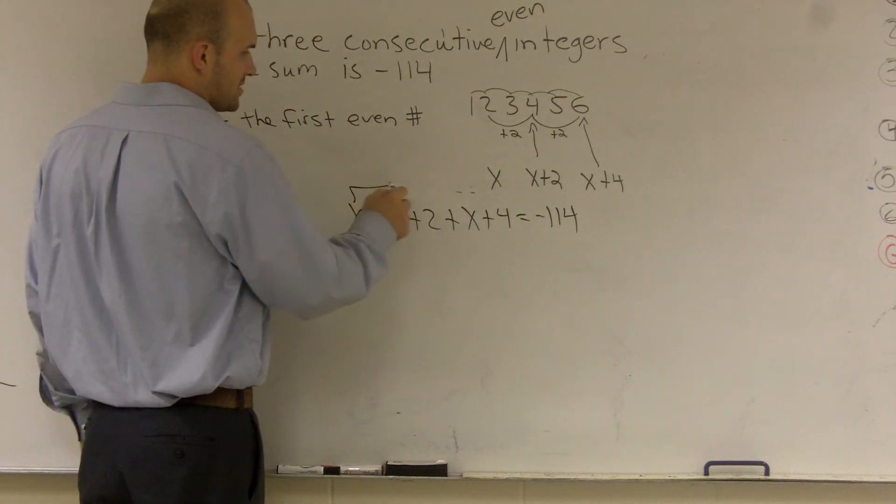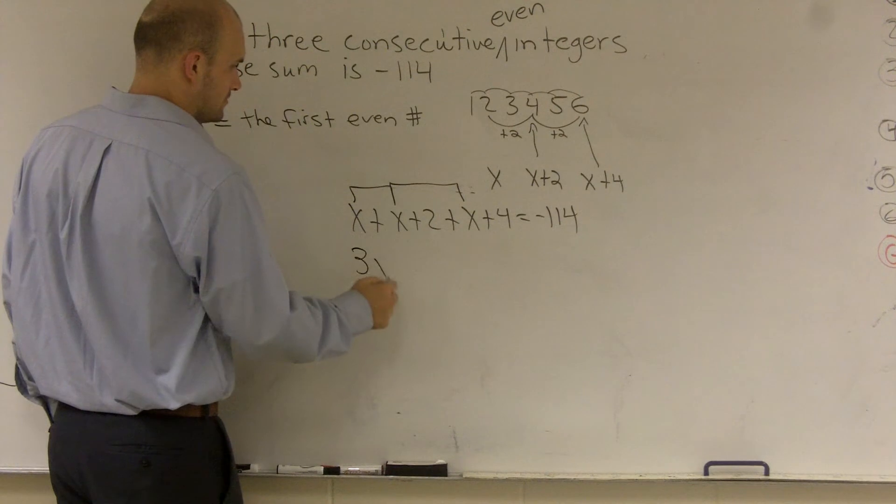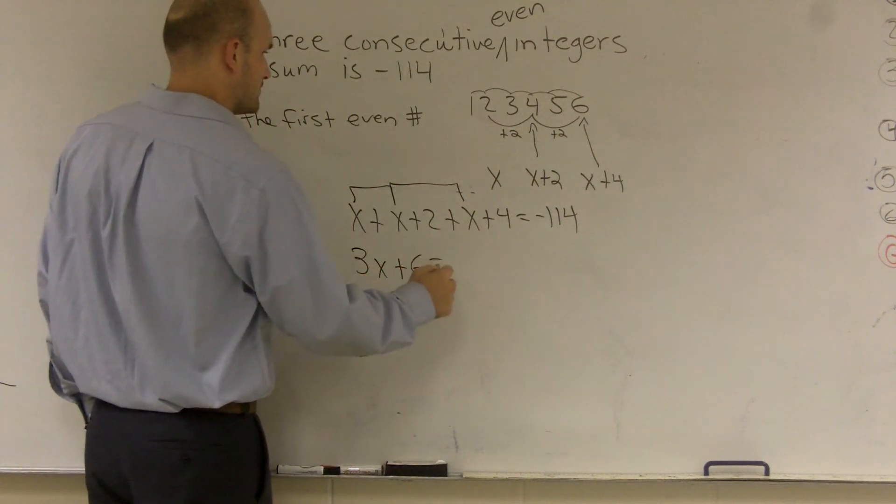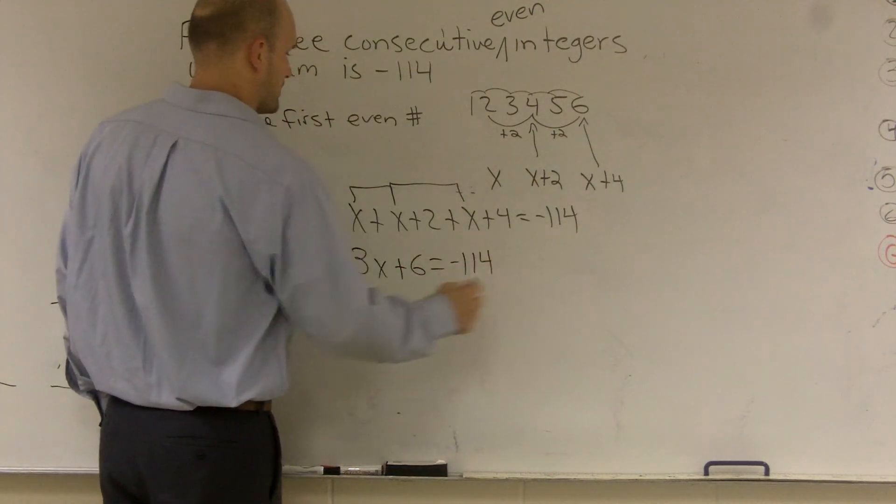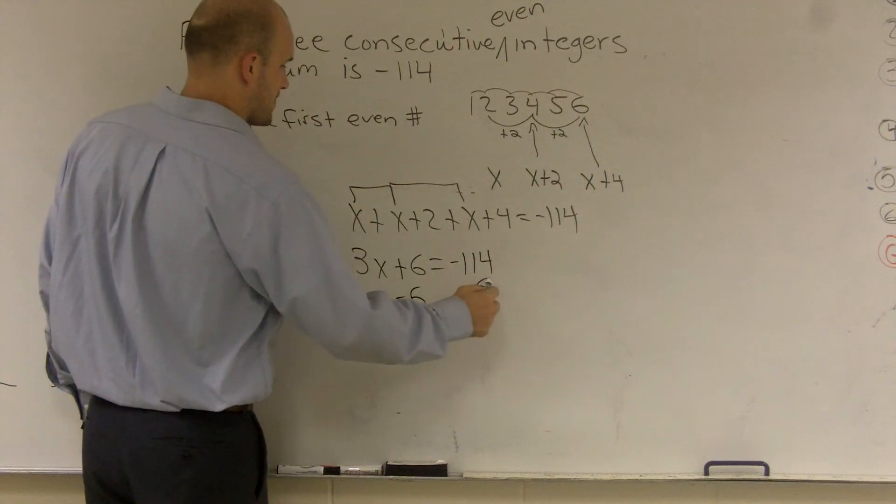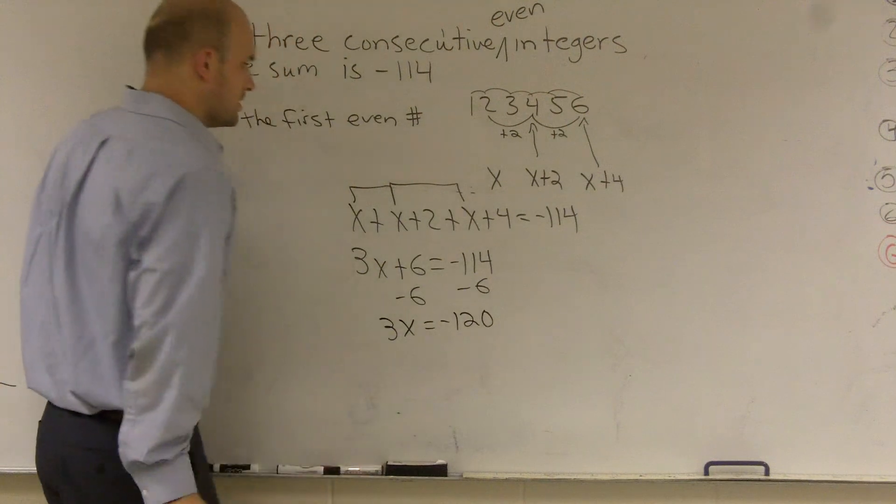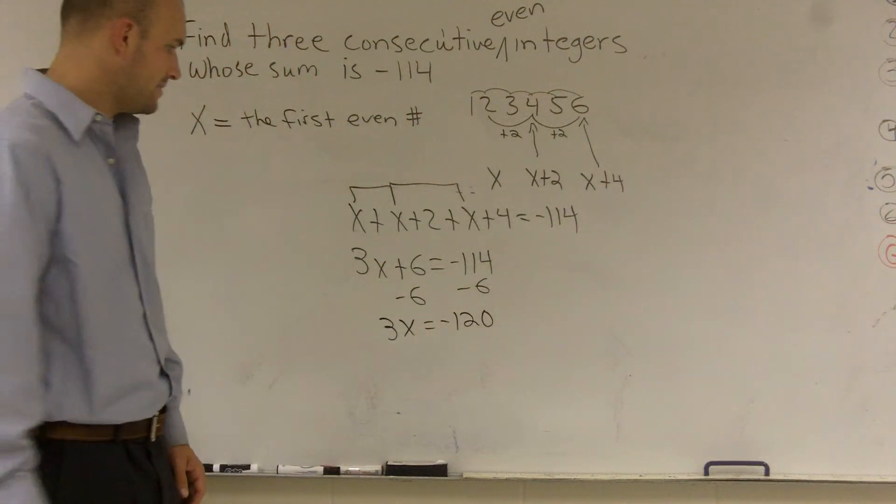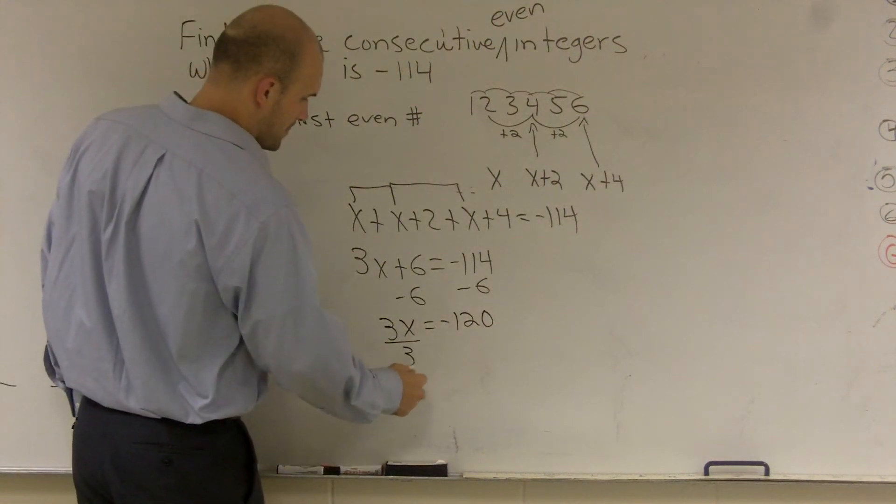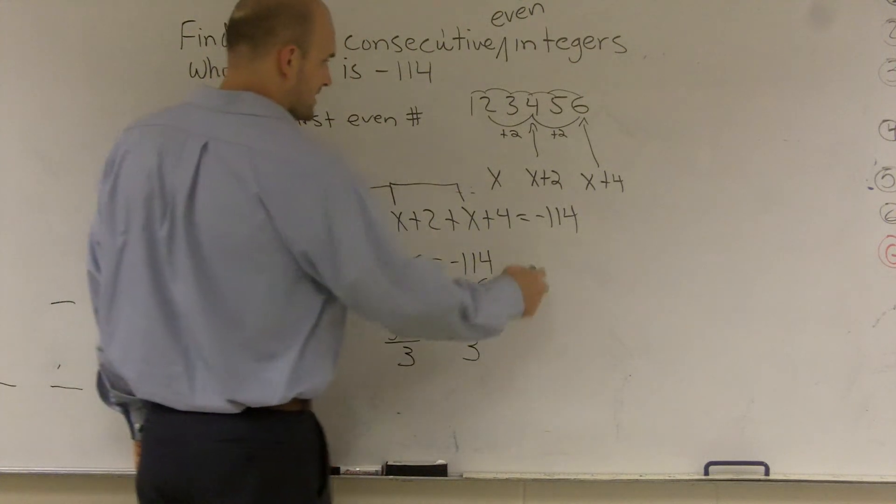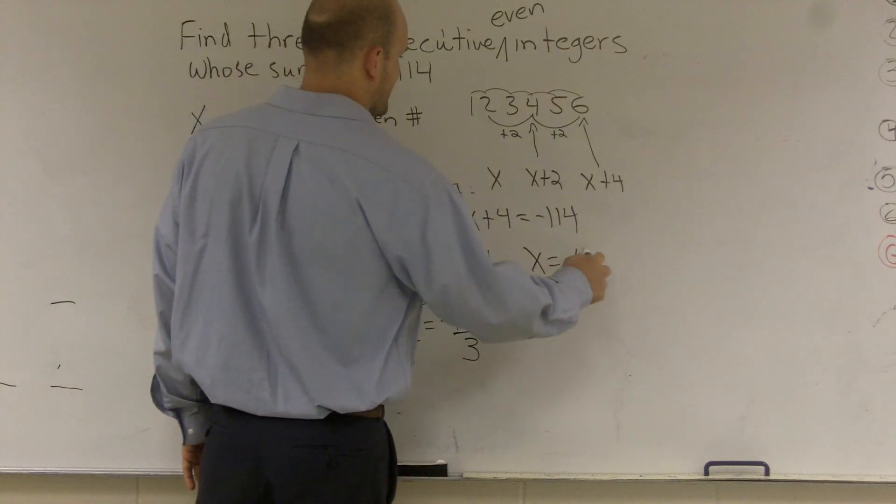I can combine my like terms. Subtract 6. So x equals negative 120. Divide by 3. And what I get is x equals negative 40.